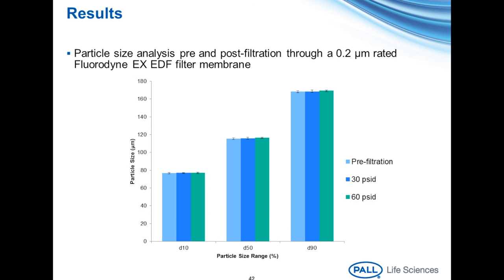This graph shows the particle size and distribution of the nanoemulsion particles themselves, because it's important that we get a sterile product, but we also want to make sure we leave the drug intact. The light blue column shows the particle size distribution pre-filtration, and the others show the distribution post-filtration. There was no detectable change—meaning we didn't lose the drug delivery system to the filter.